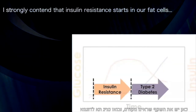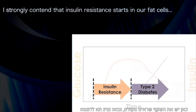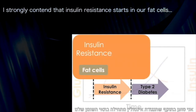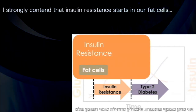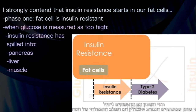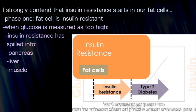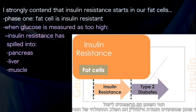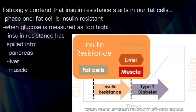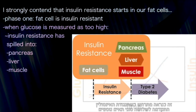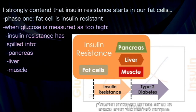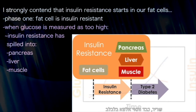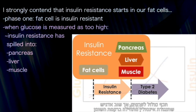Now let's superimpose specific cells onto this paradigm. I strongly contend that insulin resistance starts in our fat cells — the fat cell is the first tissue to fall. When we start to see changes in glucose, this is likely occurring once the insulin resistance has progressed or spilled into three other tissues: muscle, liver, and pancreatic alpha cells.